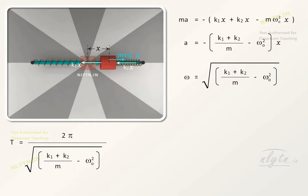Please note that here you should not confuse between omega and omega naught. Omega is the angular frequency of oscillation and omega naught is the angular speed of rotation of the system.